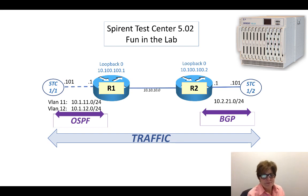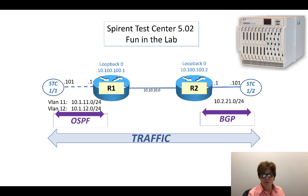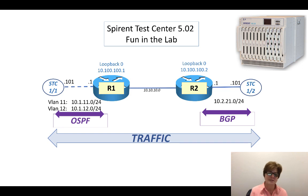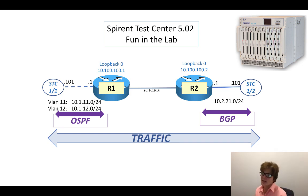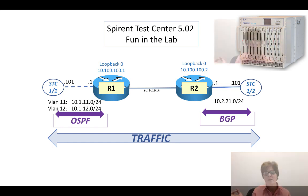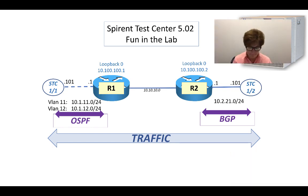Welcome to a little bit of lab rat fun: networking with Phish. We're going to complete a three-part series. First we put OSPF up between router 1 and the Spirent Test Center and advertised some prefixes, then we had BGP between router 2 and the Spirent Test Center. Now we're going to send traffic in between.